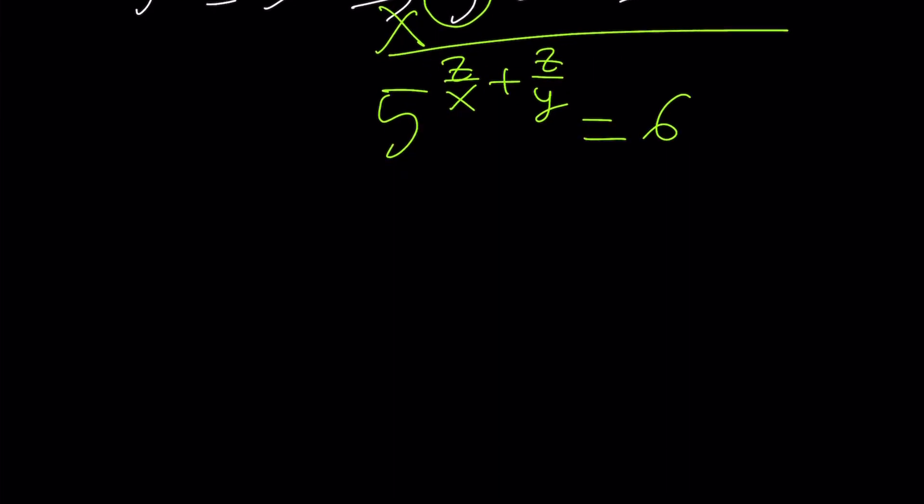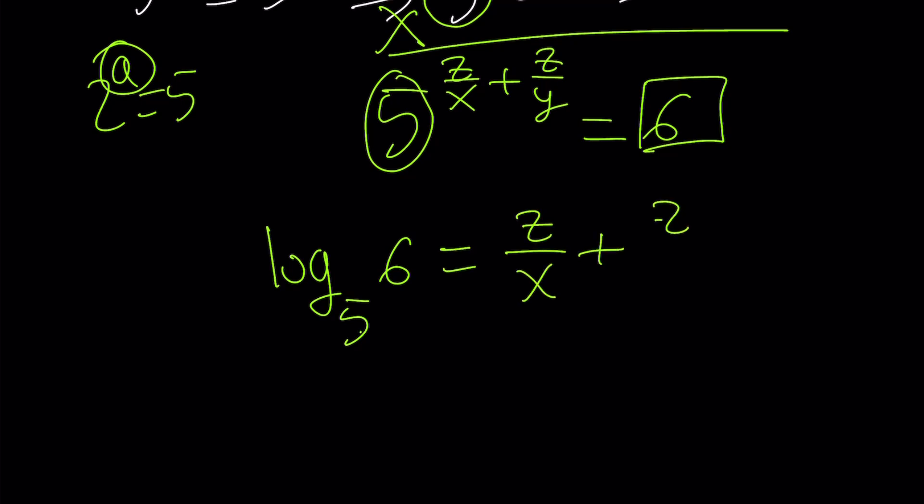Now by using the definition of logs, you can write this as log with base 5. Because the base is 5. Log is basically used like, if you have an equation like 2^a = 5, a is found by logging. And the base is going to be 2. In this case, we need to log 6, which is the answer, with base 5 to get the exponent. That's how logs are used. And that would be the answer. Because we were looking for z/x + z/y.